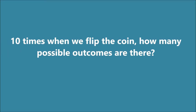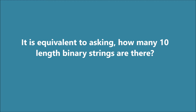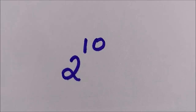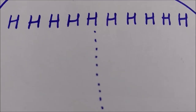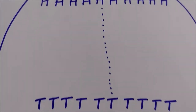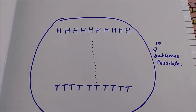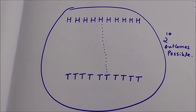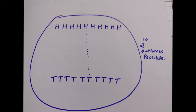We are flipping the coin 10 times. How many possible outcomes are there? Since each time we flip there are two possibilities — either head or tail — this is equivalent to asking how many 10-length binary strings are there. The answer to both is 2 raised to 10. Enumerating all possible outcomes from all 10 heads to all 10 tails, there are 2 raised to 10 possible outcomes.